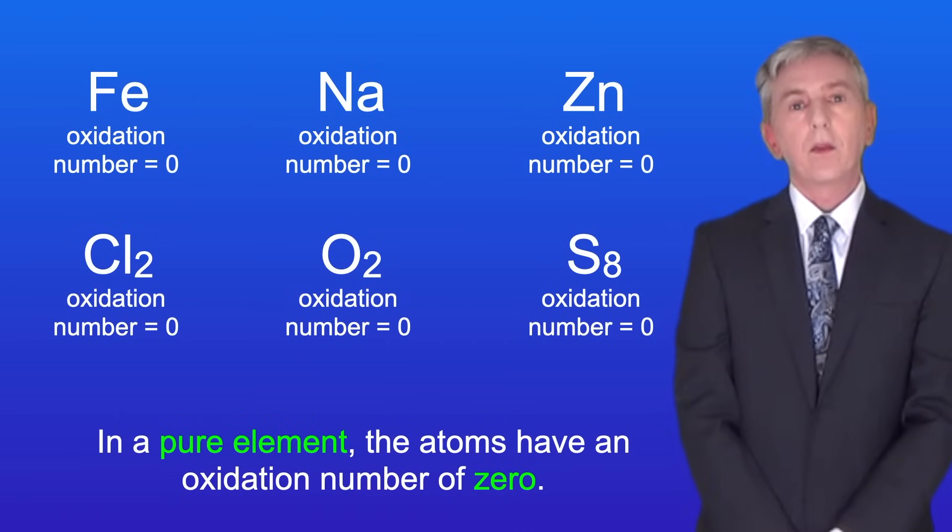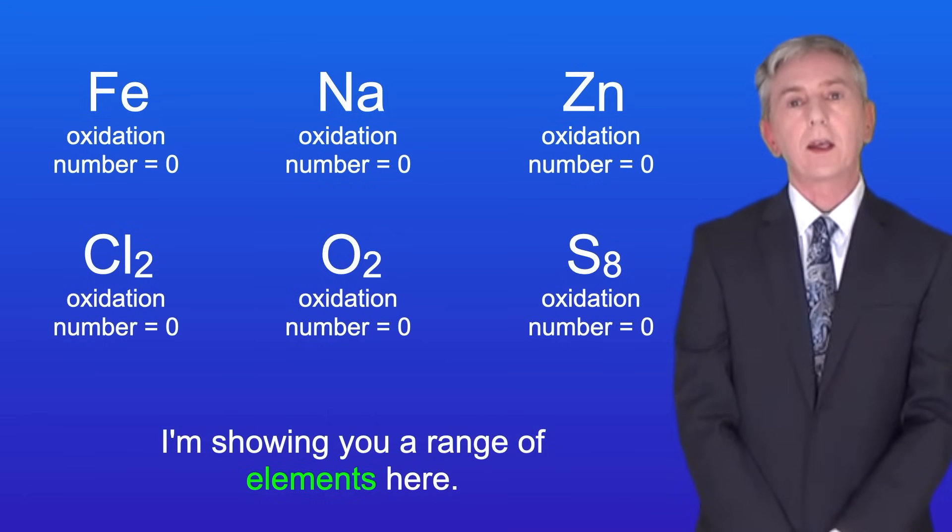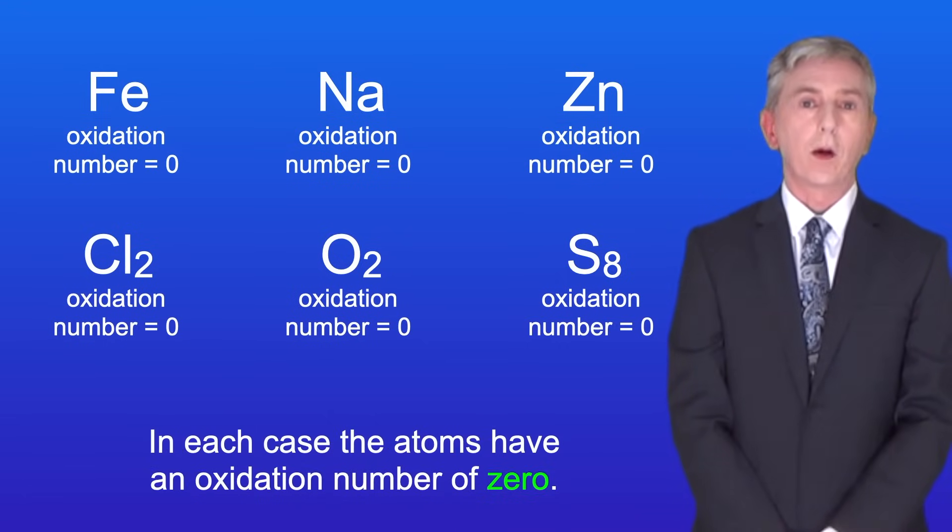Okay, in a pure element, the atoms have an oxidation number of zero. I'm showing you a range of elements here, and in each case the atoms have an oxidation number of zero.